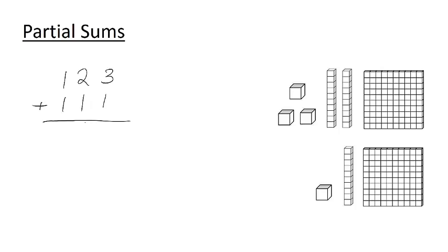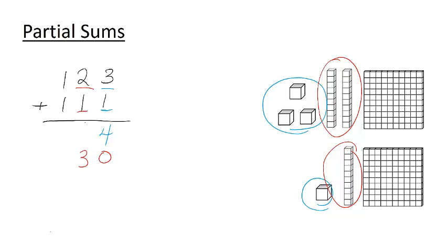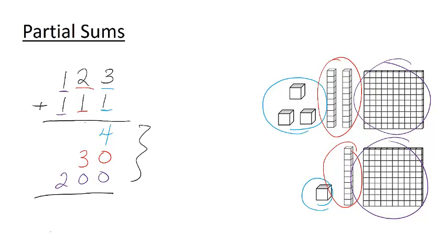If we line up the numbers representing similar block values, we add in the following way. 3 units plus 1 more unit is 4 units. 20 plus 10 is 30. And finally, 100 plus another 100 is 200. These three numbers are called our partial sums. And notice they're exactly one of the expanded forms of the number 234.